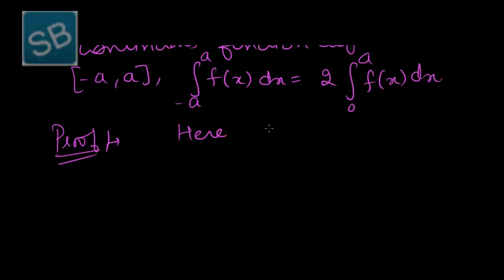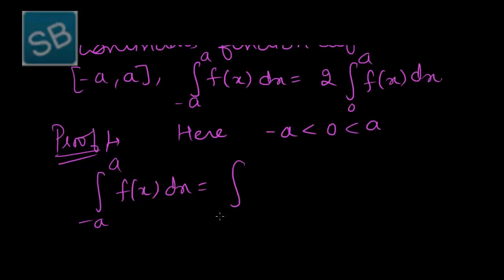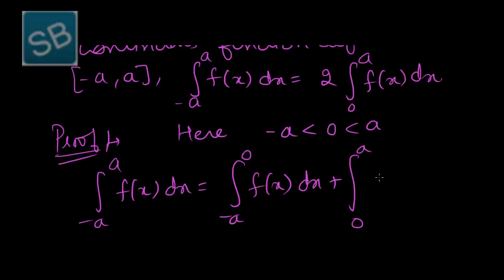Here we have two partitions of the given interval: -a < 0 < a. So the two partitions give us: the integral from -a to 0 of f(x) dx plus the integral from 0 to a of f(x) dx. Now we only need to work out the first part. Take this as number 1.